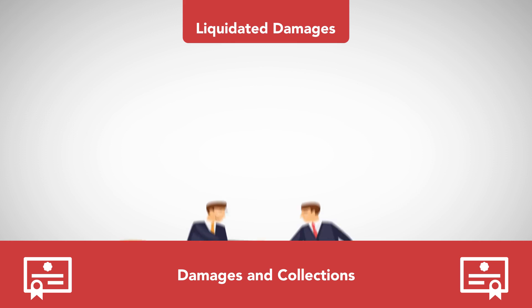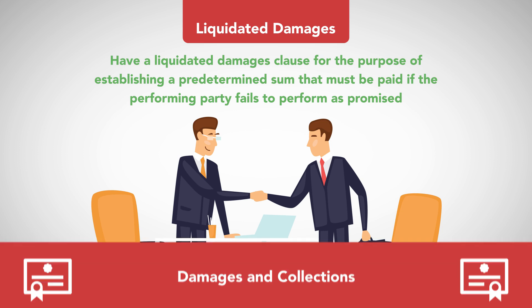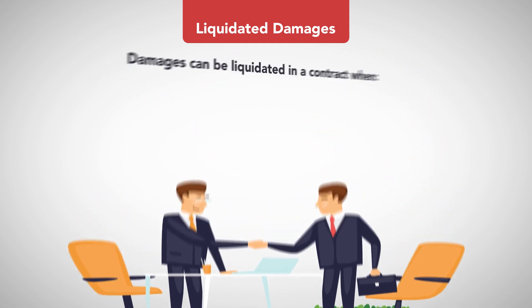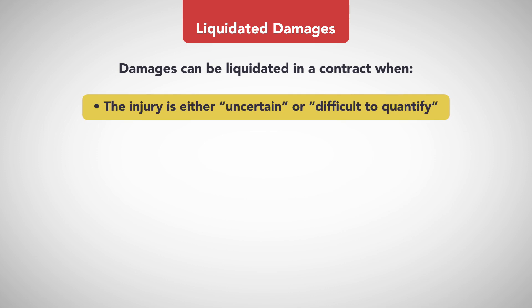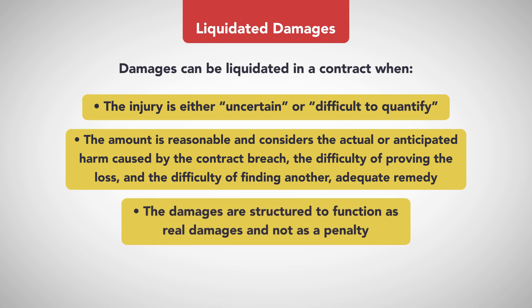Liquidated Damages. Many contracts that involve the exchange of money for performance have a Liquidated Damages Clause for the purpose of establishing a predetermined sum that must be paid if the performing party fails to perform as promised. Damages can be liquidated in a contract when the injury is either uncertain or difficult to quantify, when the amount is reasonable and considers the actual or anticipated harm caused by the contract breach, the difficulty of proving the loss, and the difficulty of finding another adequate remedy, and when the damages are structured to function as real damages and not as a penalty.